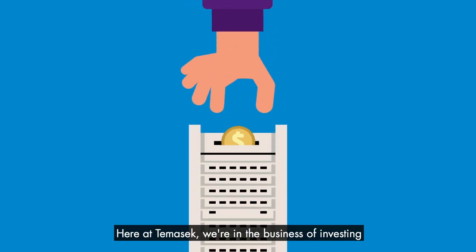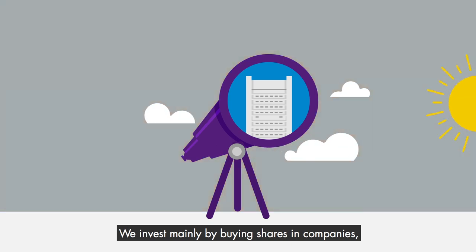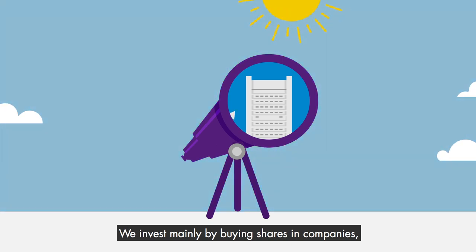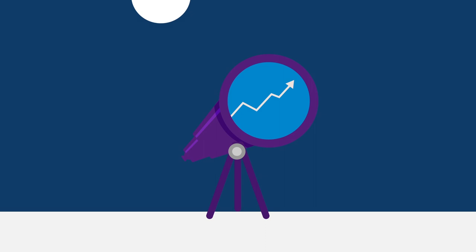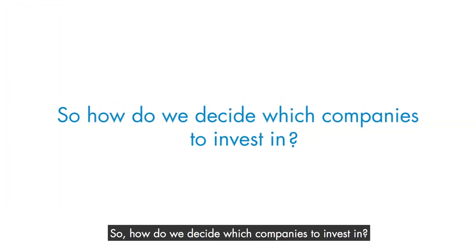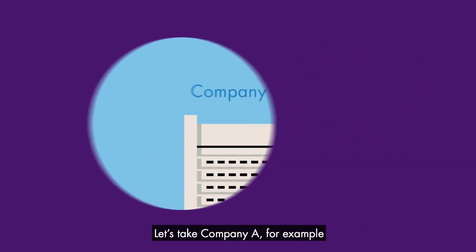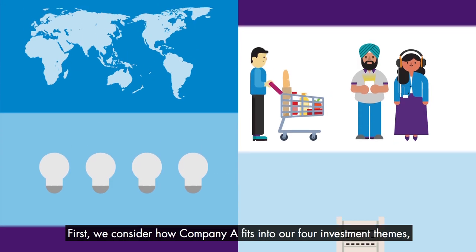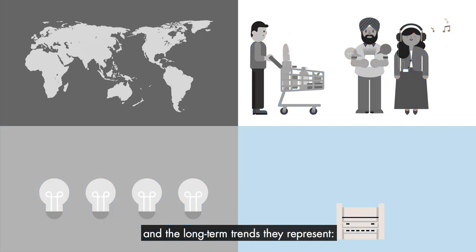Here at Tomasik, we're in the business of investing. We invest mainly by buying shares in companies with a focus on returns over the long term. So how do we decide which companies to invest in? Let's take Company A for example. First, we consider how Company A fits into our four investment themes and the long-term trends they represent.